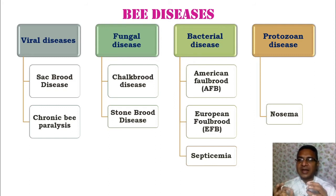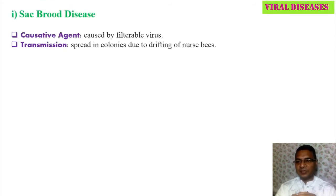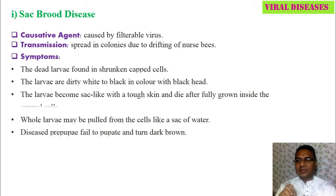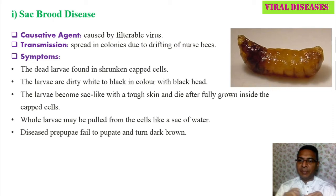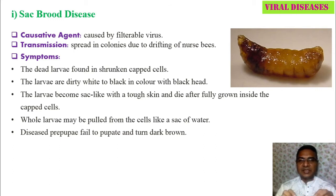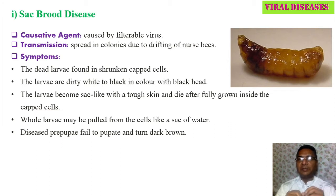The first viral disease is sac brood disease. The causative agent is a filterable virus, which is transmitted and spread in colonies due to the drifting of nurse bees. Nurse bees are present in the brood chamber and perform duties such as feeding all developmental stages, especially larval forms, drones, and the queen bee, as well as cleaning the comb.